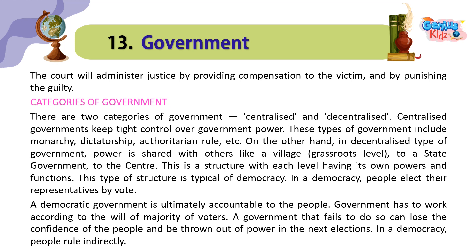Categories of Government. There are two categories of government: centralized and decentralized. Centralized governments keep tight control over government power. These types of government include monarchy, dictatorship, authoritarian rule, etc. On the other hand, in a decentralized type of government, power is shared with others — from the village grassroots level, to a state government, to the center.